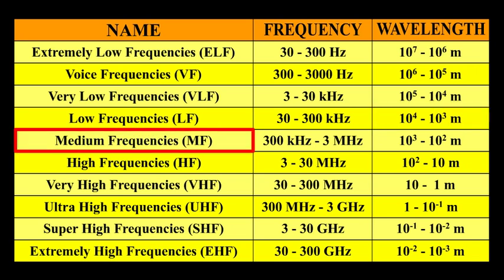Medium frequencies, i.e. MF, the frequency will be 300 kHz to 3 MHz. The wavelength will be 10 raised to 3 to 10 raised to 2 meters.